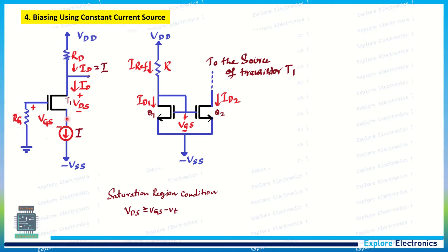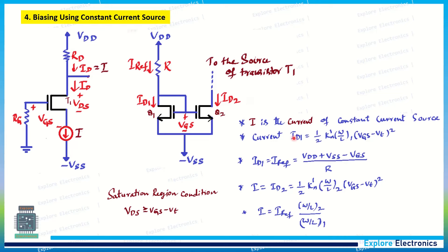The source of the amplifier transistor T1 is connected to Q2 of the current mirror circuit, which provides a constant current. We can express ID1 = (1/2) · Kn' · (W/L) · (VGS − VT)². ID1 and ID2 are equal; however, if the width-to-length ratio W/L differs between the two transistors, the currents may vary. If W/L is the same, ID1 and ID2 are equal, giving a constant ID2 and keeping the device always in saturation.